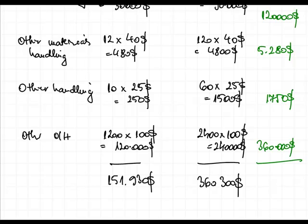Summing all allocated costs, the total overheads come to $151,930 for product A and $360,300 for product B, which together equal the total overheads we started with to allocate.